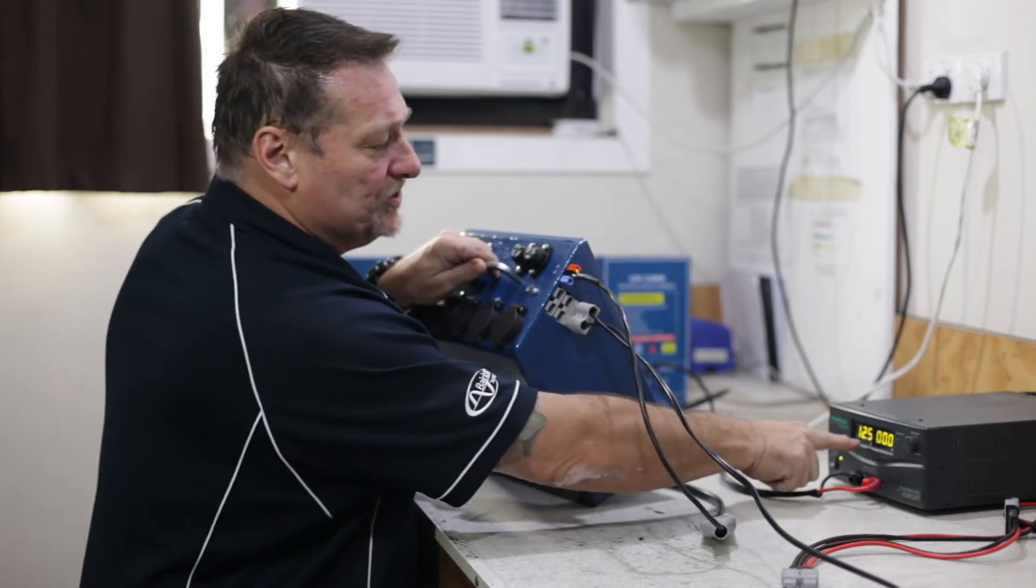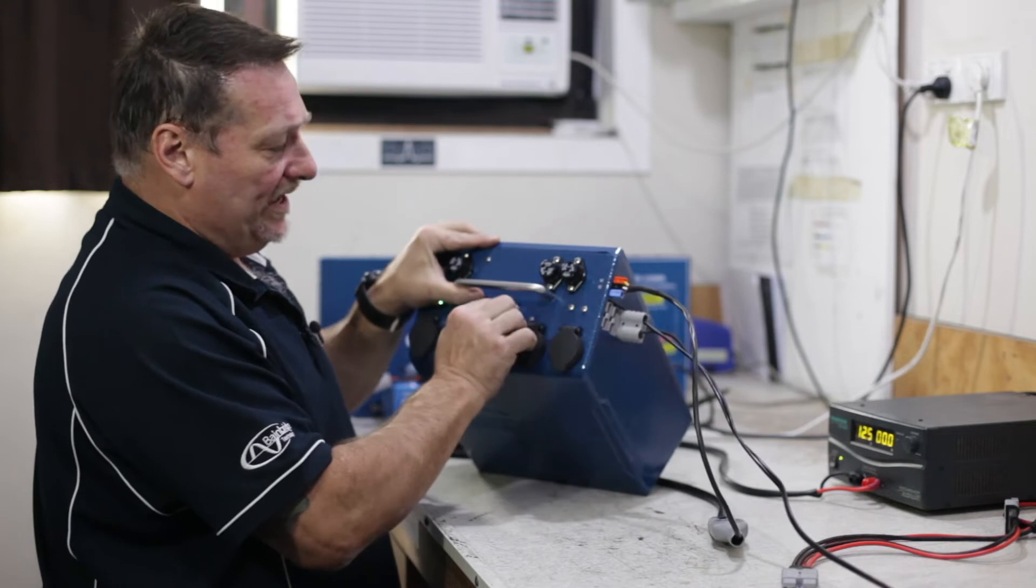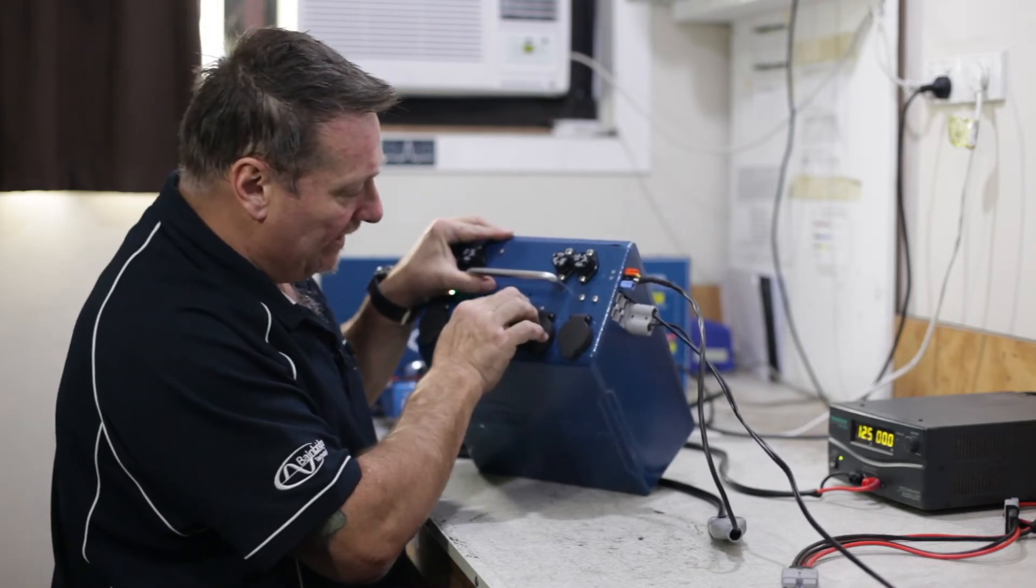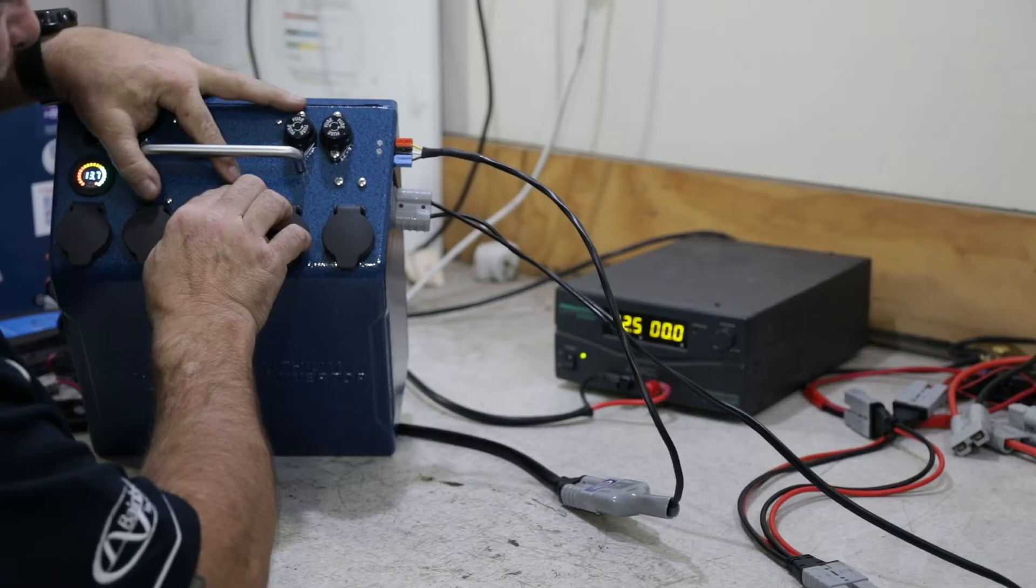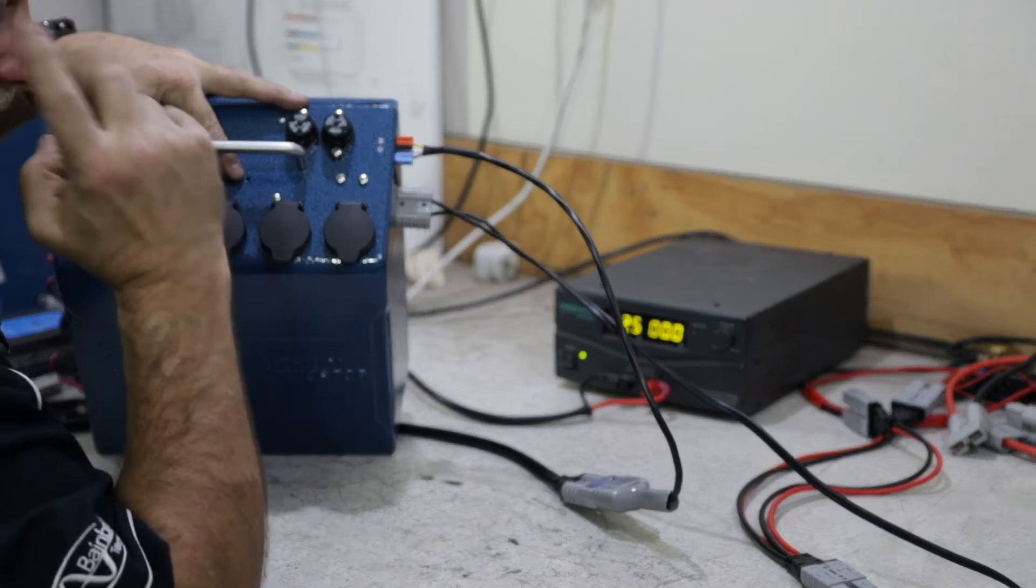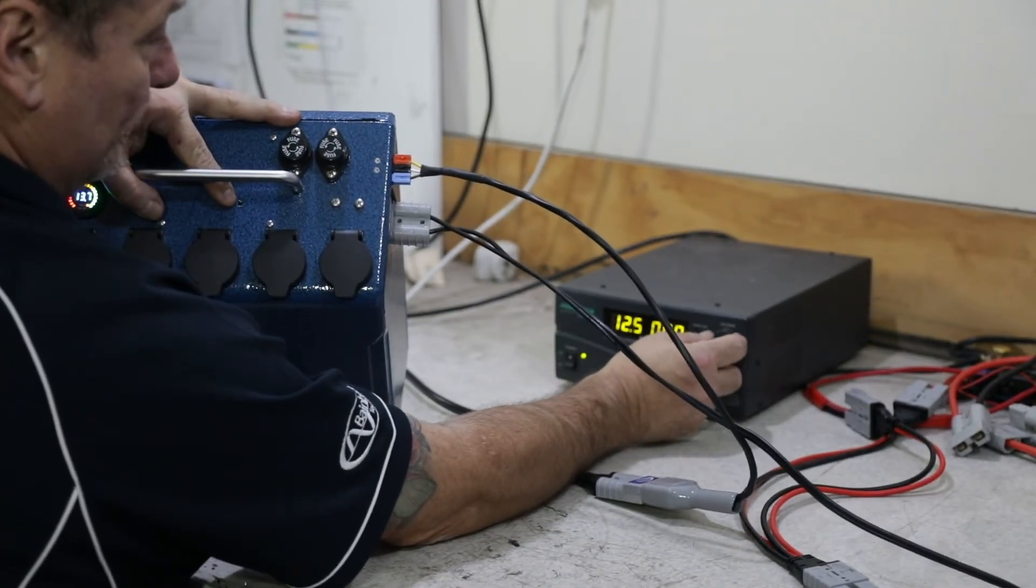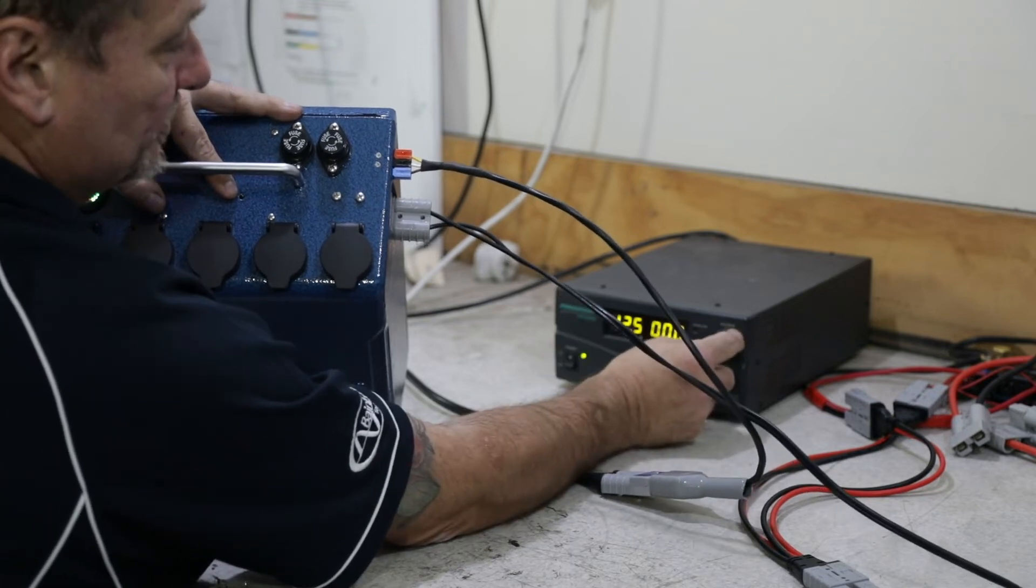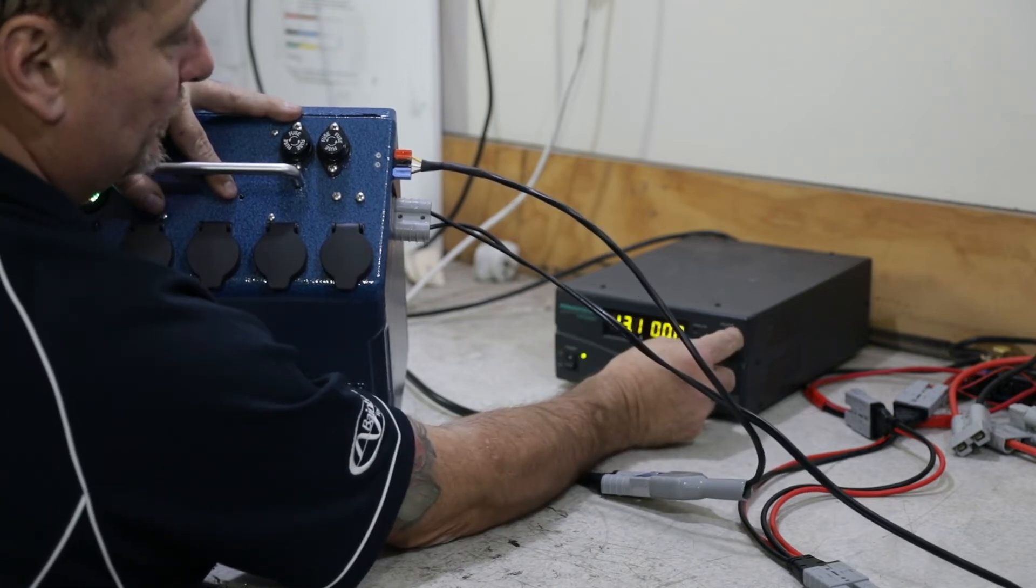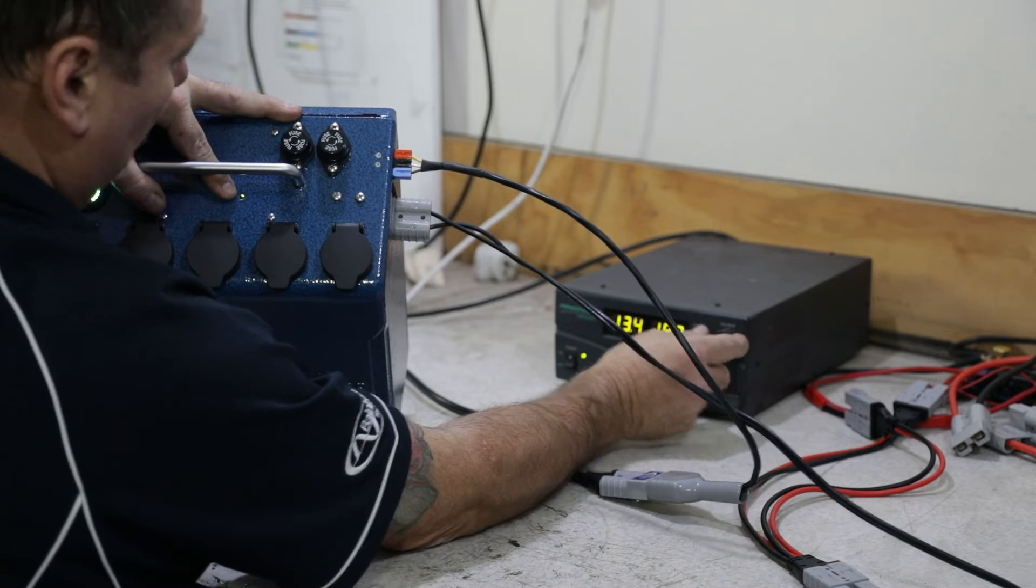As you notice 12.5 volts. In the top here there's a little green indicator light and it will light up really bright when it tells you that the charge is on. You'll notice if you look in there that'll get really bright green once this voltage goes above 13.2.